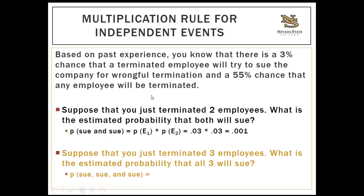You also need to be prepared for word problems, which typically include percentages. To get the probability from a percentage, divide by 100. For example: if there's a 3% chance that a terminated employee will sue the company for wrongful termination and a 55% chance that any employee will be terminated, and you just terminated two employees — what is the probability both will sue? Since they're already terminated, P equals 0.03, so 0.03 times 0.03 equals 0.001.